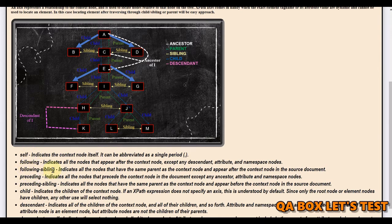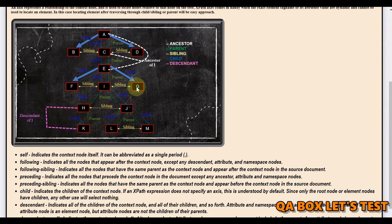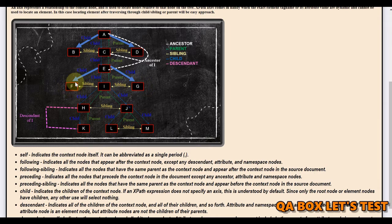Following sibling: node 'i' has got two siblings because they have a common parent. Node 'g' is following 'i' and hence it's called the following sibling. The other node before 'i' becomes the preceding sibling.